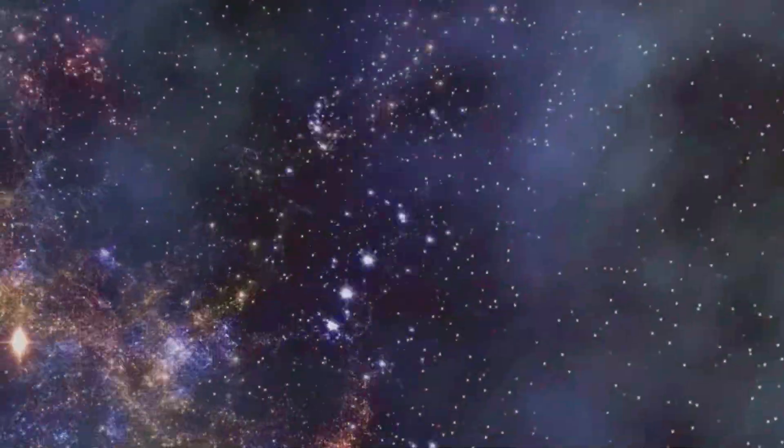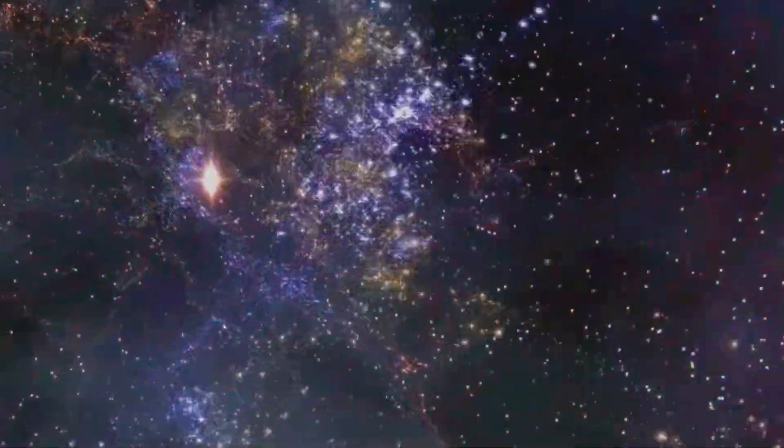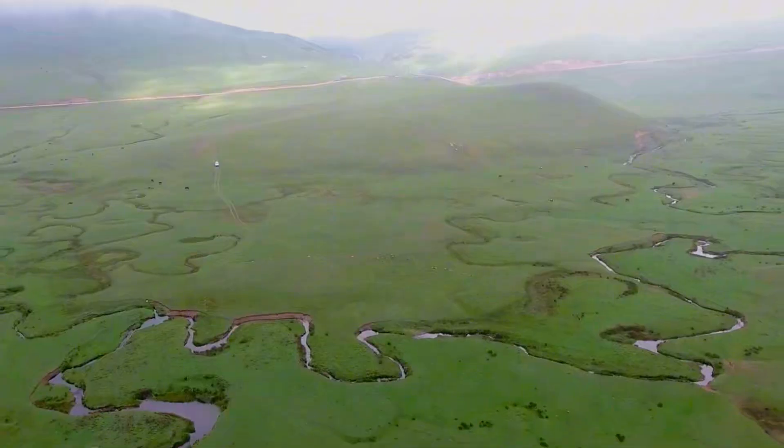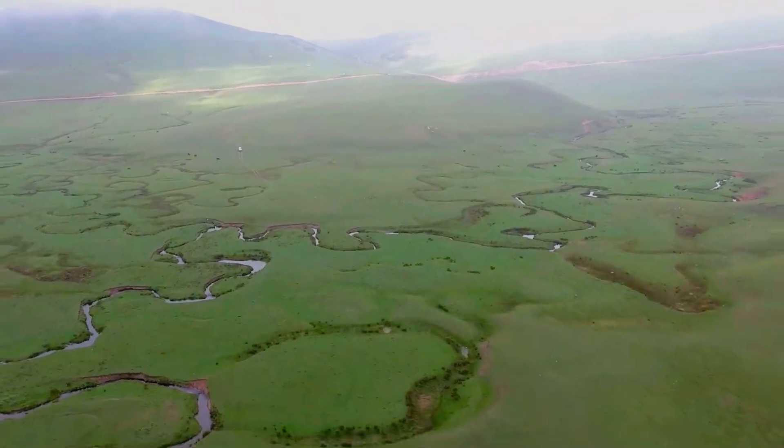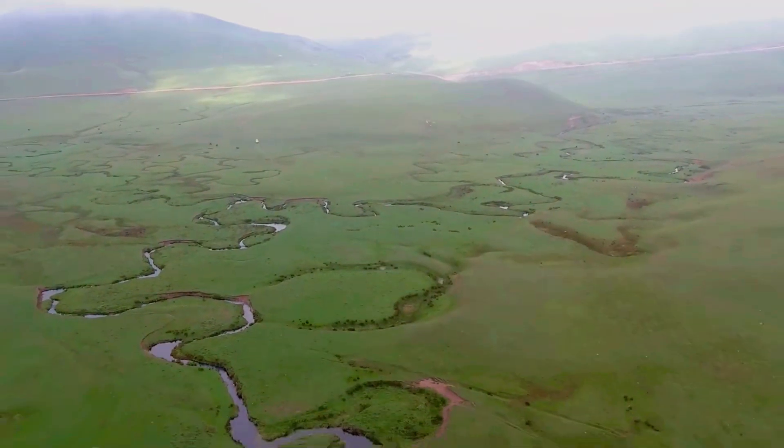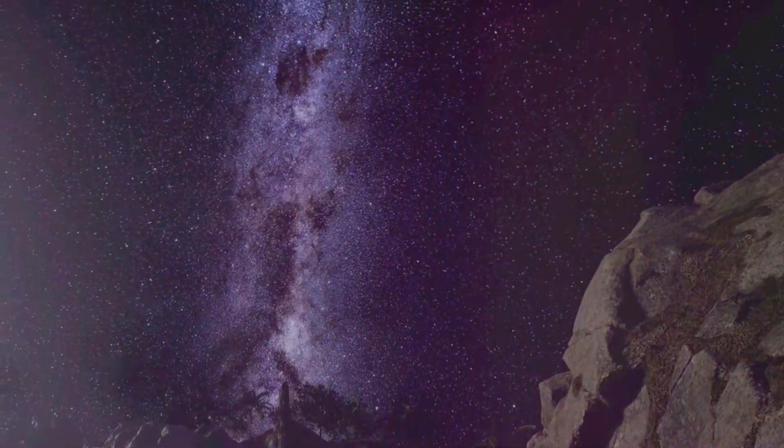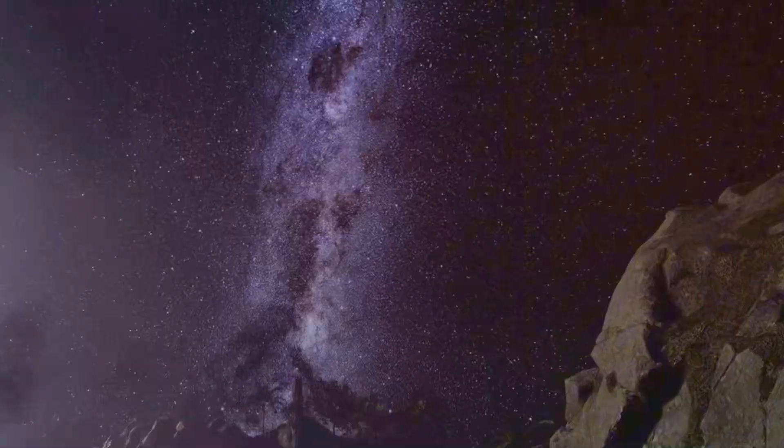Visualizing the Great Attractor's influence is tough. It's on a scale beyond our experience. Imagine the universe as a river. The Great Attractor is a hidden trench, creating a local current that diverts galaxies. Our Milky Way is like a boat caught in this current, drifting sideways as we flow downstream.